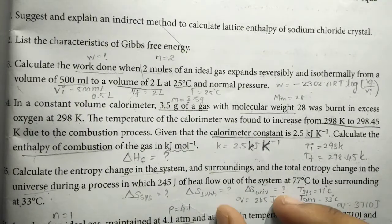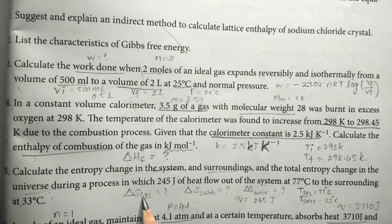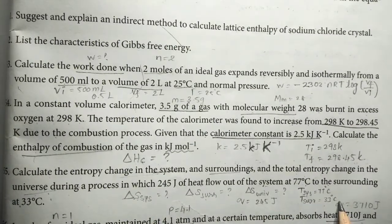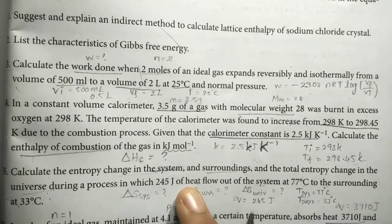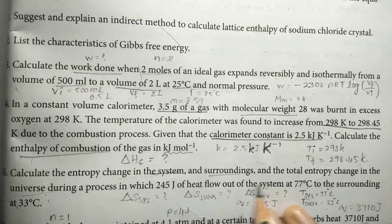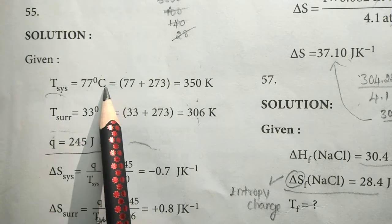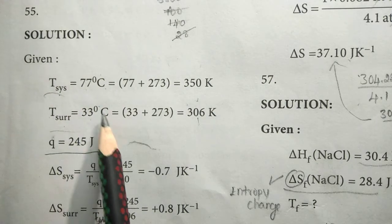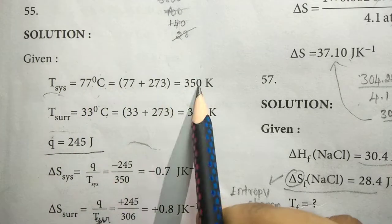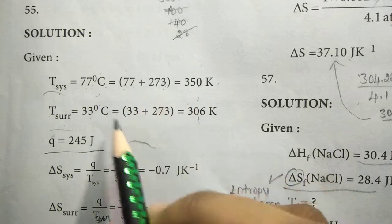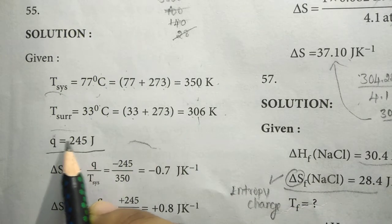The temperature of the system is 77 degrees Celsius and the temperature of the surrounding is 33 degrees Celsius. We add 273 to convert to Kelvin. So 77 plus 273 is 350 Kelvin, and 33 plus 273 is 306 Kelvin. Heat Q is equal to 245 J.